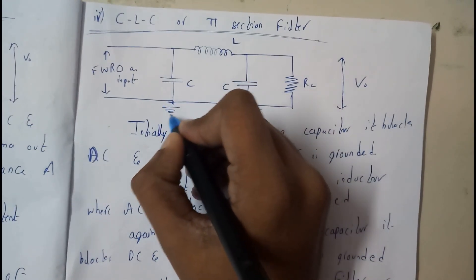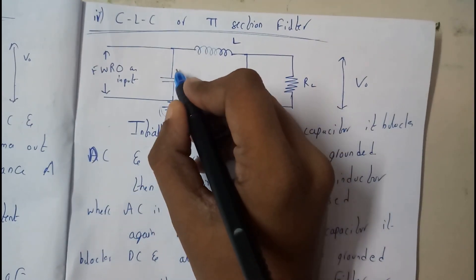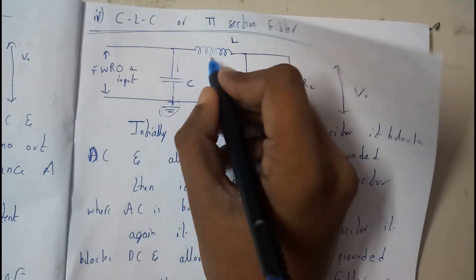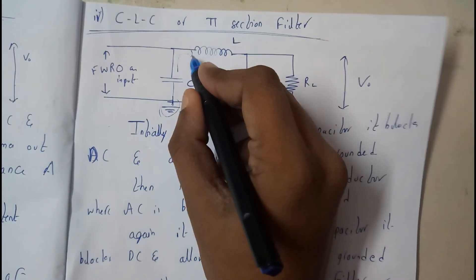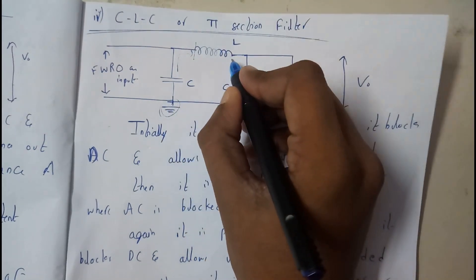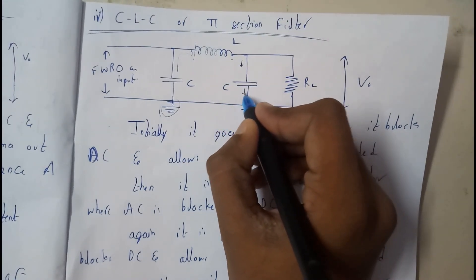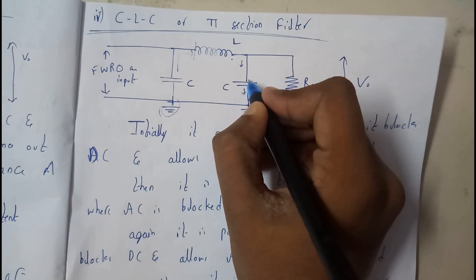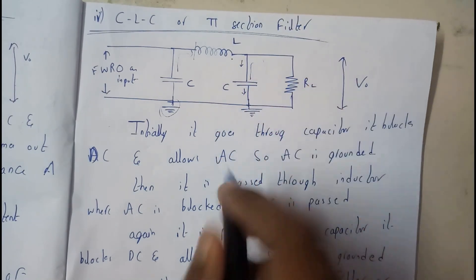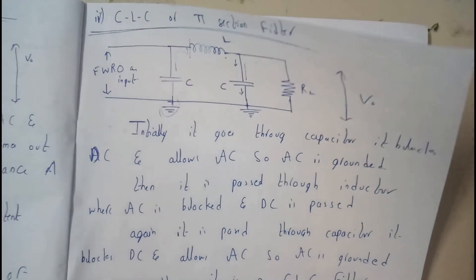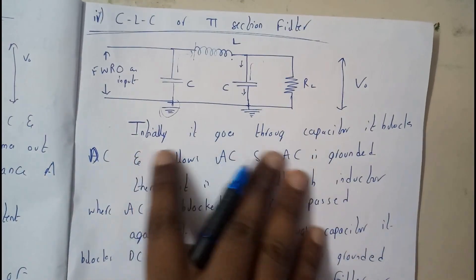The inductor blocks AC and allows DC, so here DC enters and most of the AC content is removed. The DC will travel to the load. That's how this basically works.